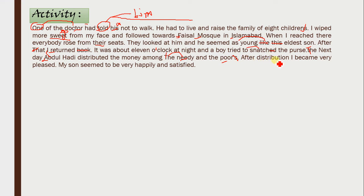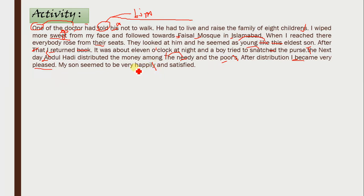'After distribution, I became very pleased.' This is correct — 'pleased' is an adjective used after the linking verb 'became.' We always use the first degree of adjectives with 'very.' Similarly, 'my son seemed to be very happy,' not 'happily' — adverb is not required. 'Seemed' is also a linking verb, and linking verbs always take adjectives, not adverbs.